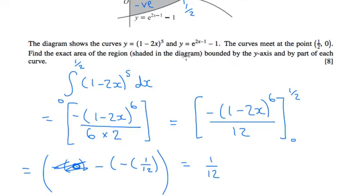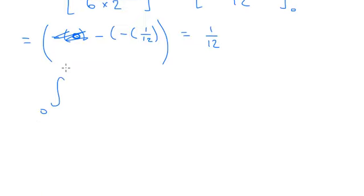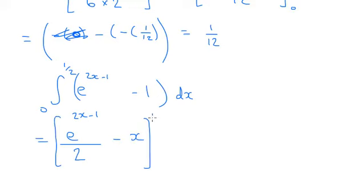So if we do the same thing now with the e^(2x-1) minus 1, we're expecting a negative answer for this. So again, let's integrate this. Integrating e^(2x-1) is going to be e^(2x-1), but divided by the coefficient of this, which is 2. So we're going to get minus x. Again, between a half and 0.